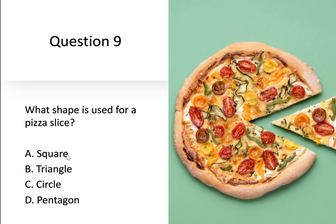Question number 9. What shape is used for a pizza slice? Option A, square. Option B, triangle. Option C, circle. Option D, pentagon.